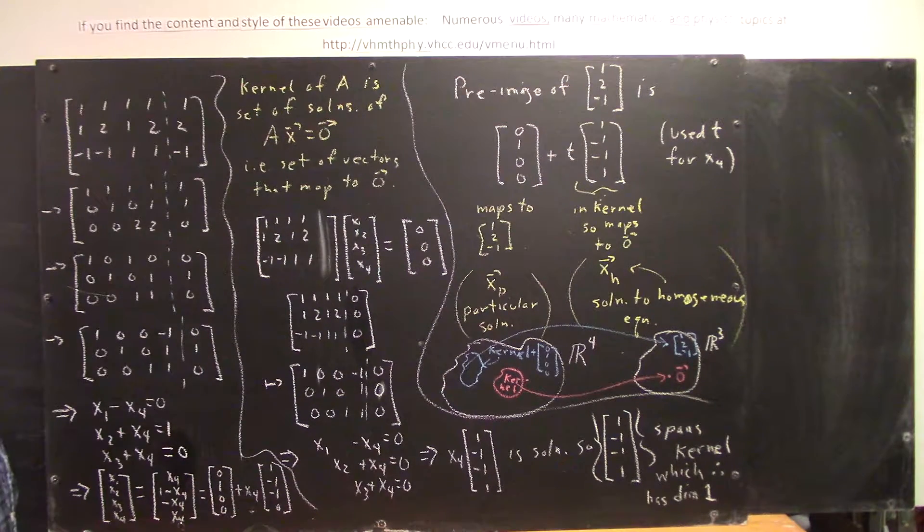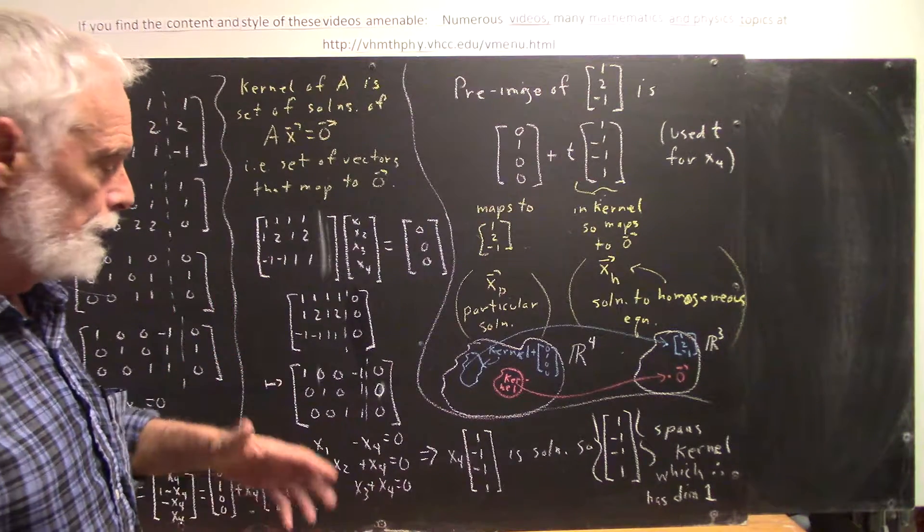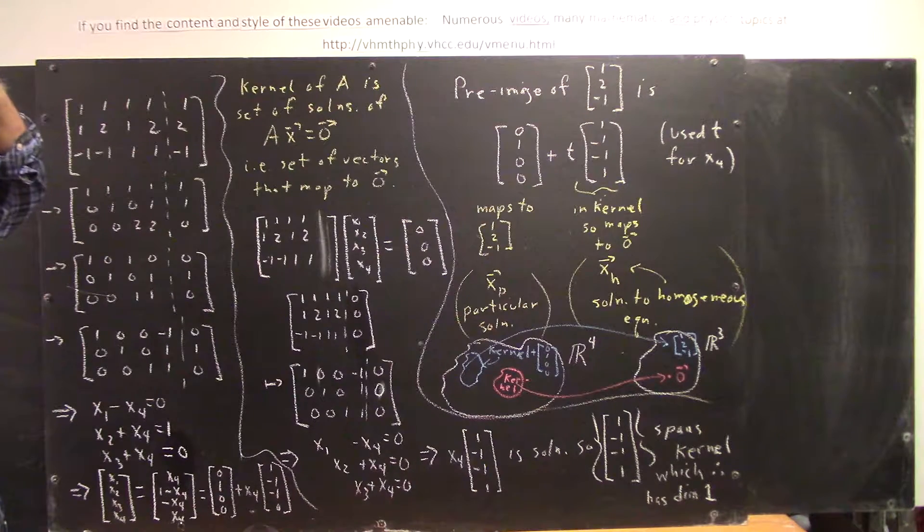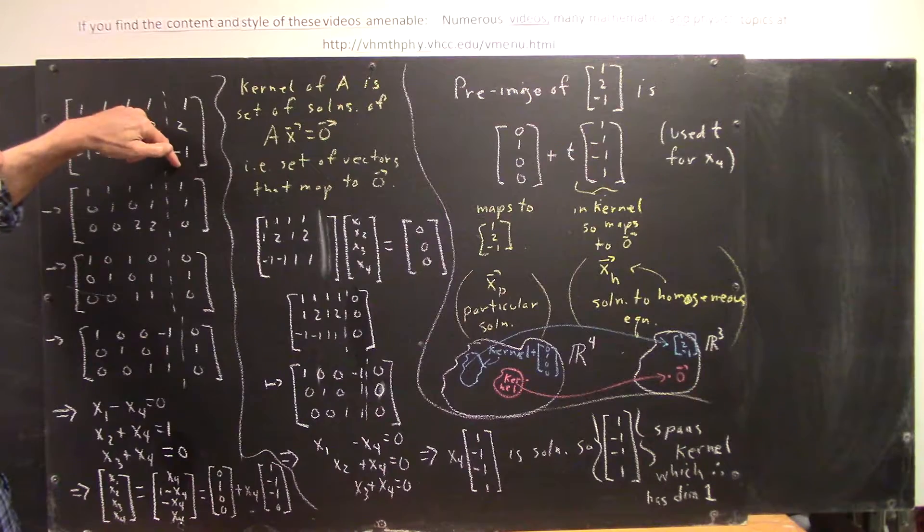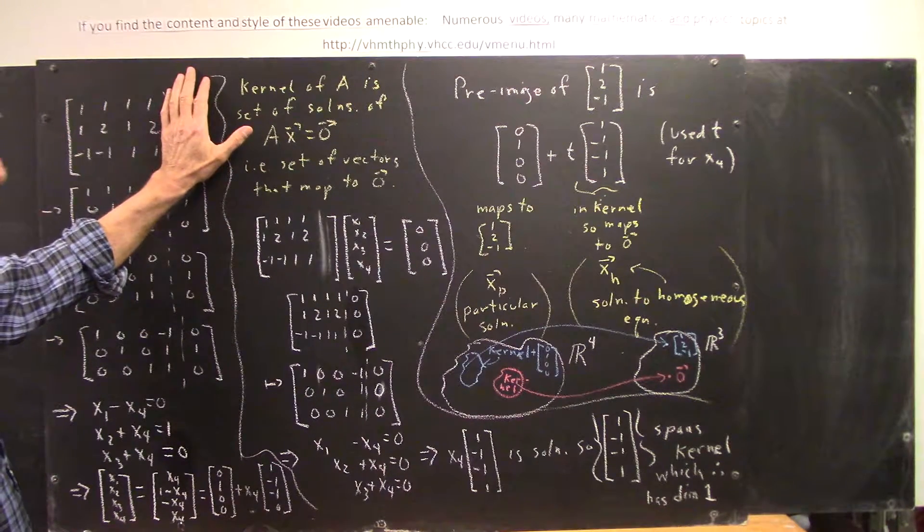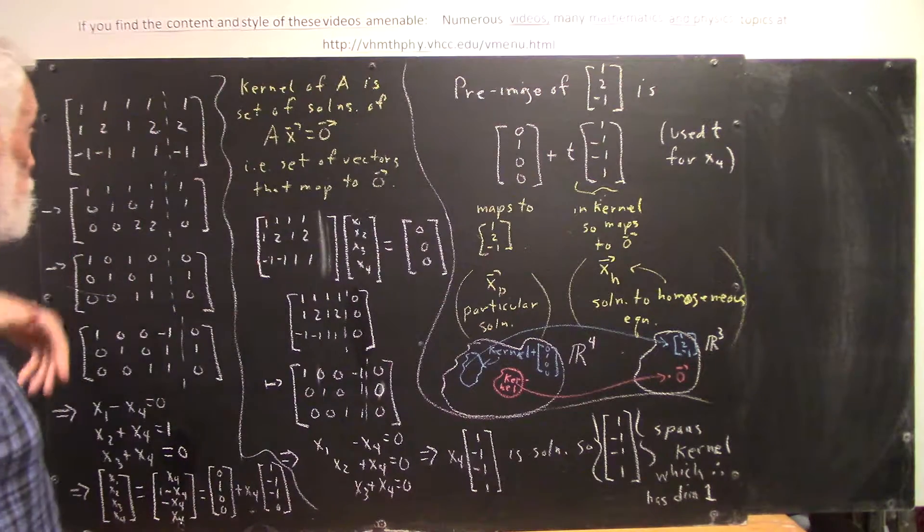Okay, we correct an error in the preceding 1025 class where we have the question of what are the pre-images of the column vector 1, 2, negative 1 under the mapping indicated by the first four columns of this augmented matrix. And as we did then, we reduced the augmented matrix.